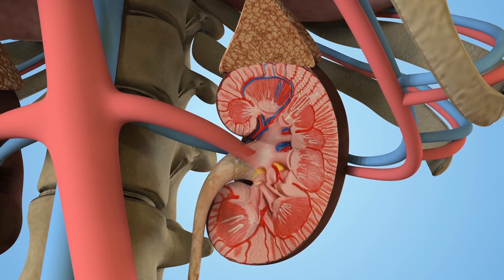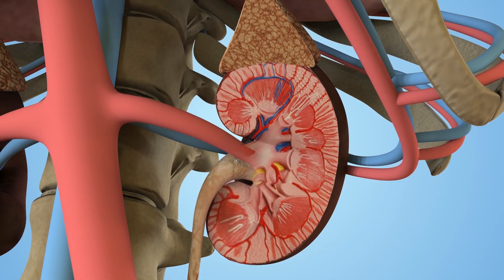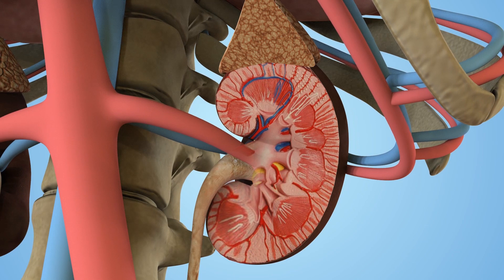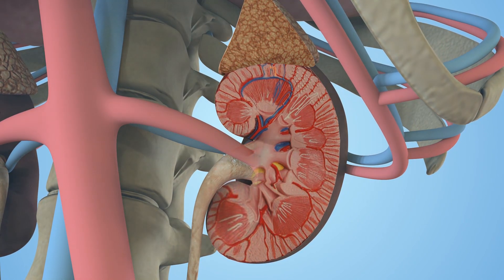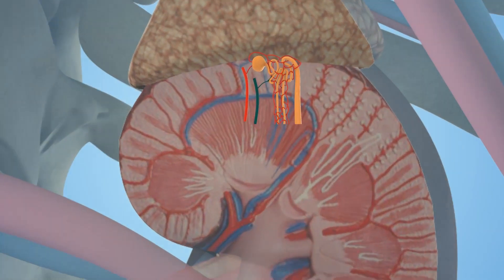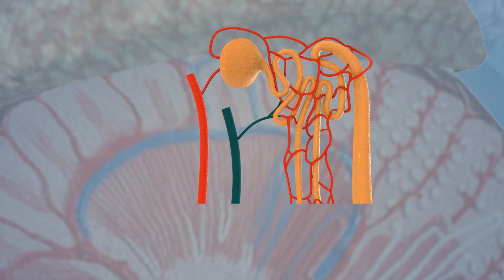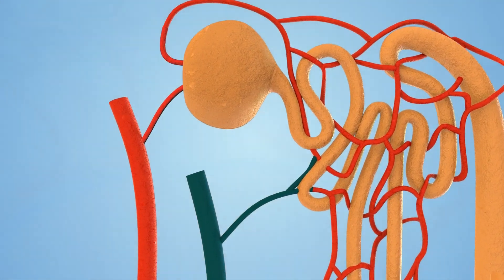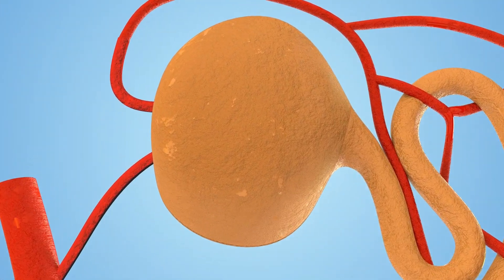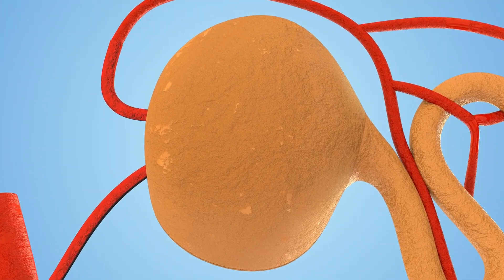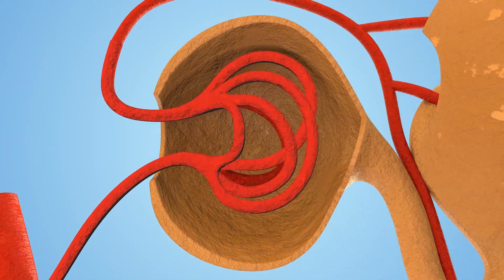This is a magnified view of the filter within the kidney called the glomerulus and the tubules. This is where toxins are filtered, electrolytes are exchanged, and urine is produced.